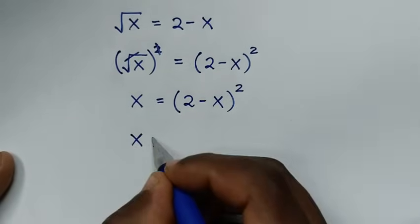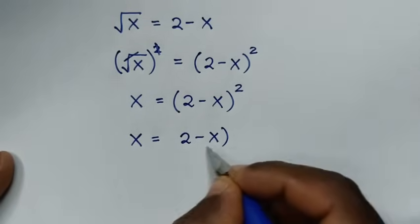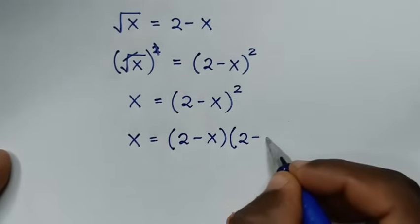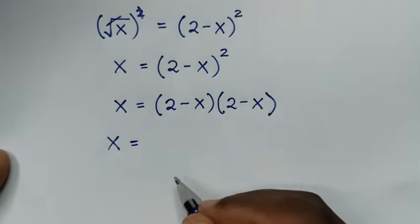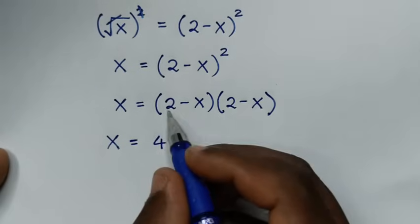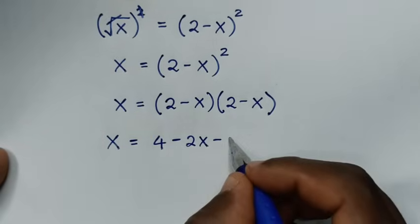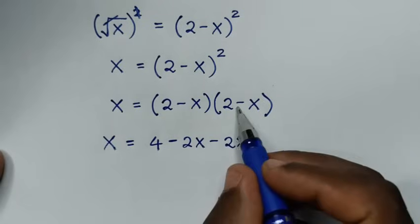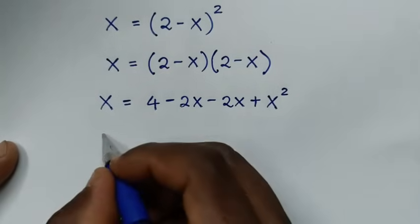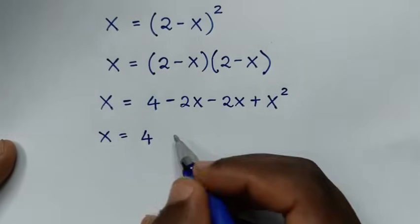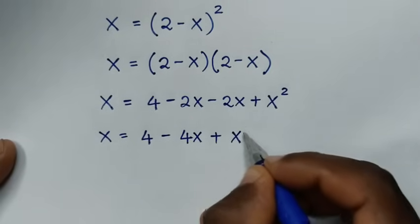Then, x is equal to (2 minus x) squared, which is the same as (2 minus x) times (2 minus x). Expanding: 2 times 2 is 4, 2 times negative x is negative 2x, negative x times 2 is negative 2x, and negative x times negative x is positive x squared. So x is equal to 4 minus 4x plus x squared.